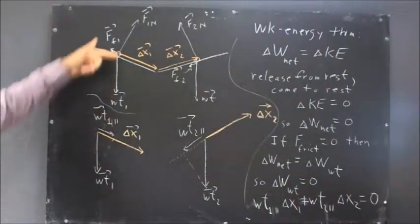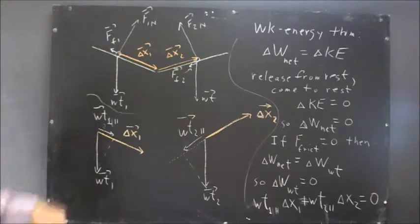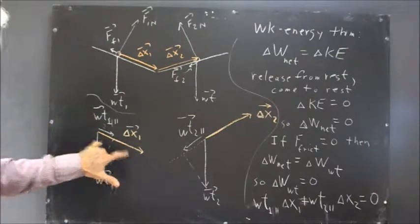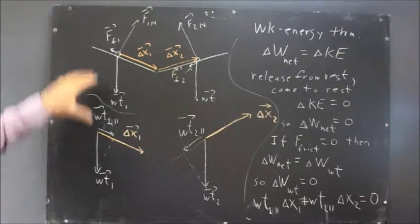So we have our delta x1 vector here, our weight vector projection, parallel component. We multiply this by this. We get the work done by gravity on the first incline.